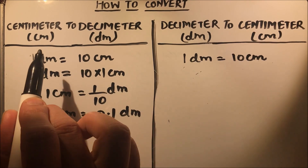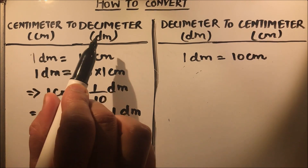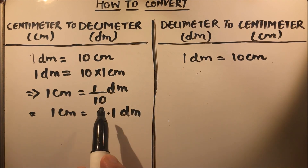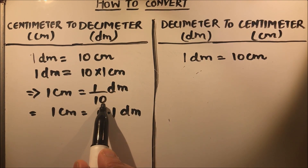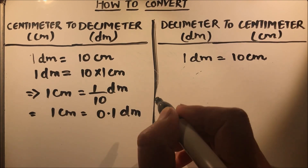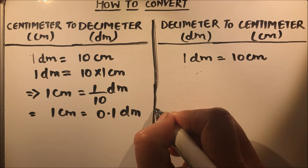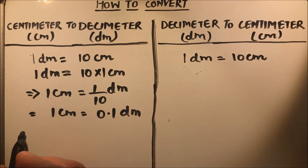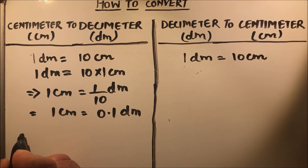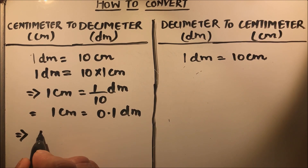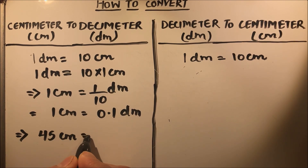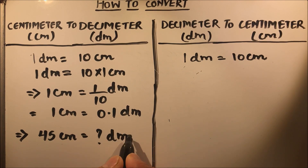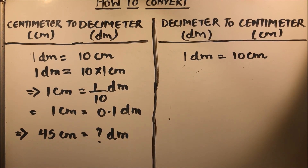So to convert from centimeters to decimeters, we need to divide the quantity by 10. Let's learn this with an example. Suppose we need to convert 45 centimeters — how many decimeters is that?